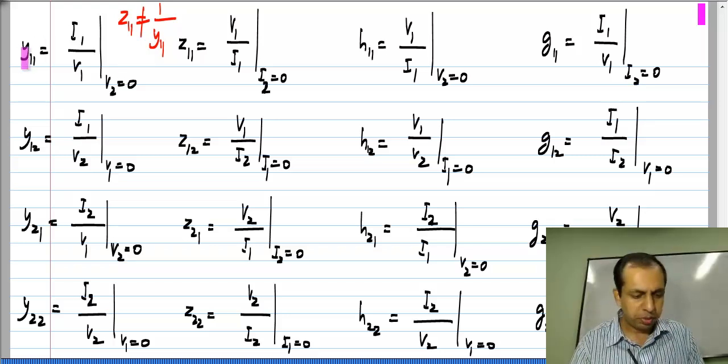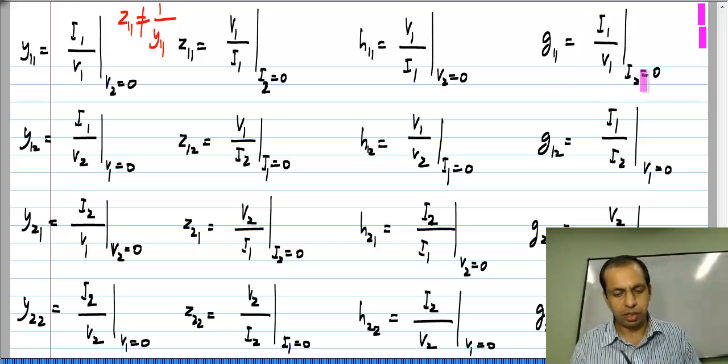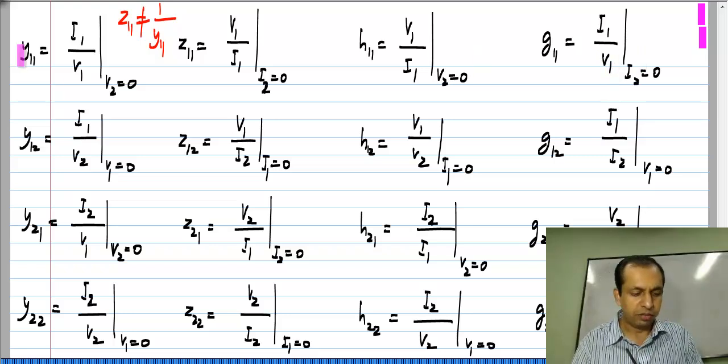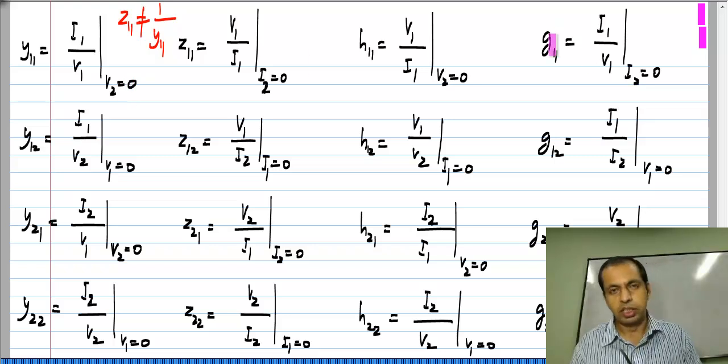Also, if you look at the expressions, Y11 is I1 by V1 and G11 is also I1 by V1, but they are measured under different conditions. Y11 is with port 2 short circuited and G11 is with port 2 open circuited.